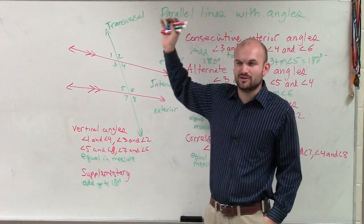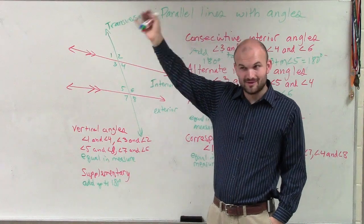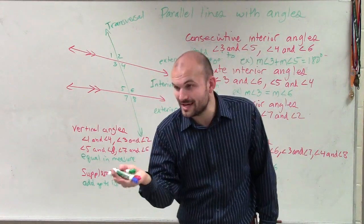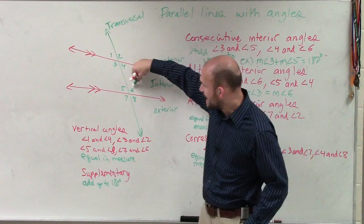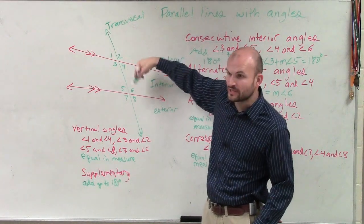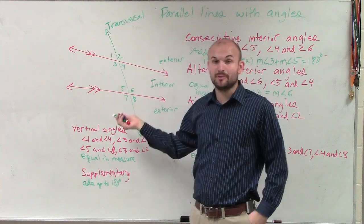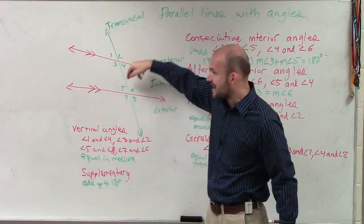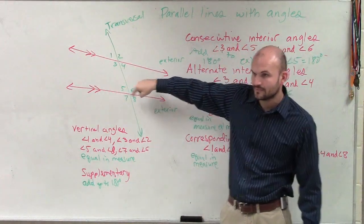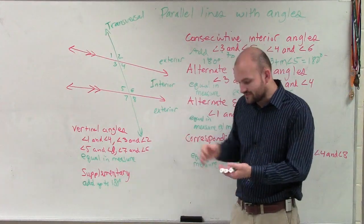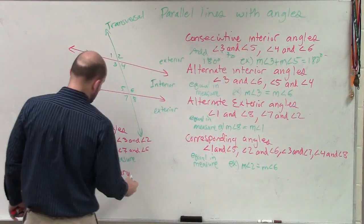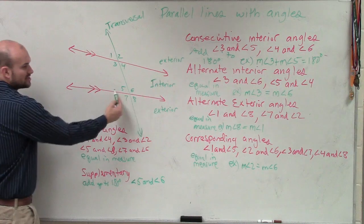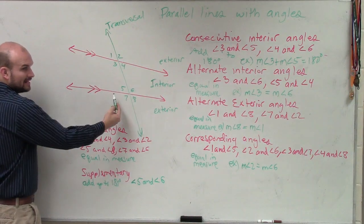Does anybody remember why we call them a linear pair? Because they're right next to each other. Yeah, they're right next to each other — that means they're adjacent. When you have two angles that are right next to each other and they're adjacent, we call them a linear pair. A linear pair is supplementary because they create a straight line. Do you see how angles 5 and 6 are all on this line? So an example of supplementary angles — angle 5 and angle 6. Those are supplementary. They add up to 180 because they make a line.